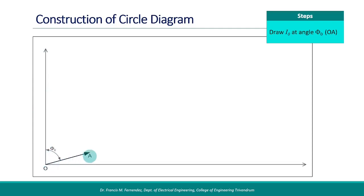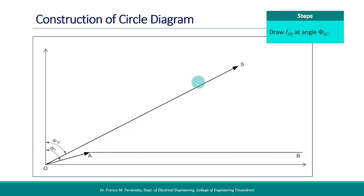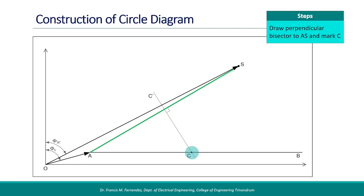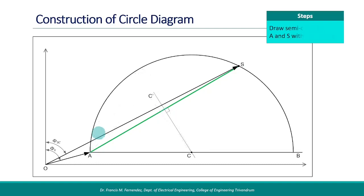OA represents the no-load current. Starting from A, draw a horizontal line AB. Next, the per-phase input current at the blocked rotor state with rated voltage applied, ISN, is to be represented. Draw the line OS counting the current scale at an angle phiSC. Then draw a new line AS connecting points A and S. The next step is to draw a perpendicular bisector to AS. This bisector meets the horizontal line AB at point C. Draw a semicircle with C as center and CA as radius. This circle represents the locus of current for the motor under different operating conditions.